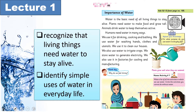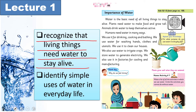On page number 99, it's about the importance of water. In Lecture Number 1, the student learning outcome or objective that will be attained is: all students will be able to recognize that living things need water to stay alive, and they will also be able to identify simple uses of water in everyday life.